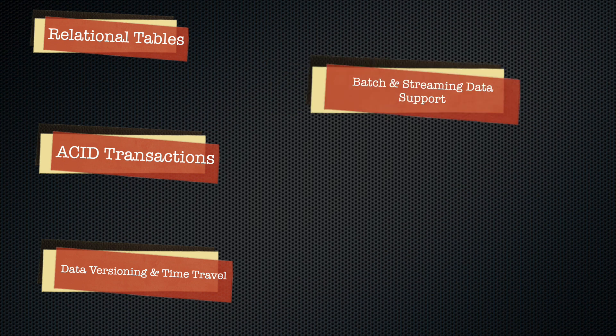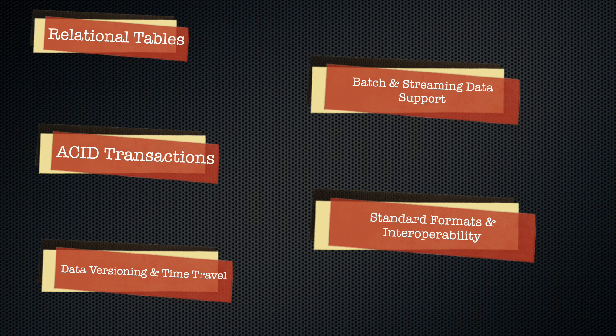Number four: batch and streaming data support — you can utilize delta tables as sinks and sources for both static and streaming data, thanks to the Spark Structured Streaming API. Number five: standard formats and interoperability — you can store your data in Parquet format, delta tables integrate smoothly into data lake ingestion pipelines, and you can query them in SQL via the Microsoft Fabric lakehouse SQL endpoint.